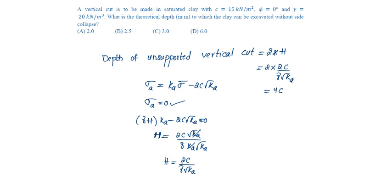That is 4 into C is 15 by gamma is 20 into Ka, which is given as 1 minus sin phi by 1 plus sin phi. Since phi is given as 0 degrees, Ka will be equal to 1, so root 1, which will be equal to 3 meters, option C.